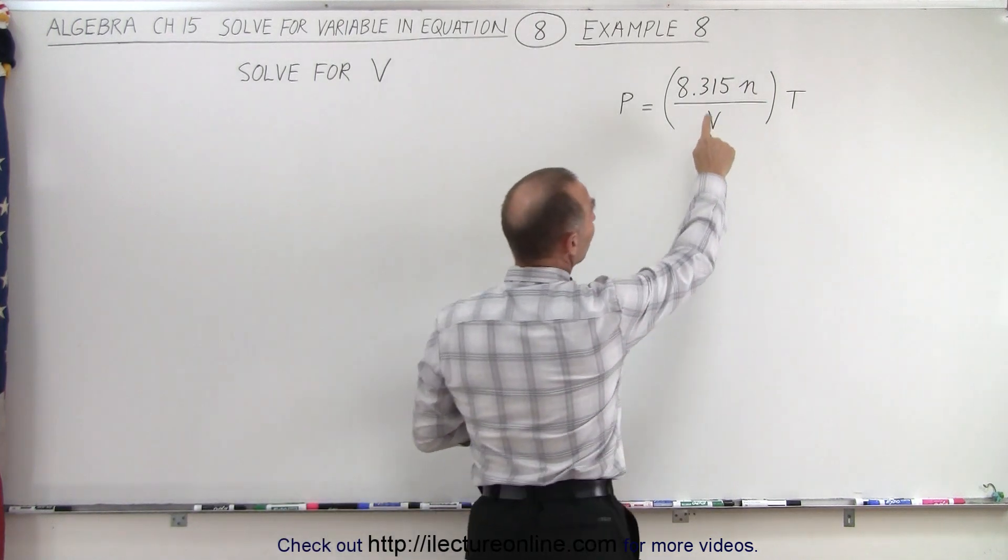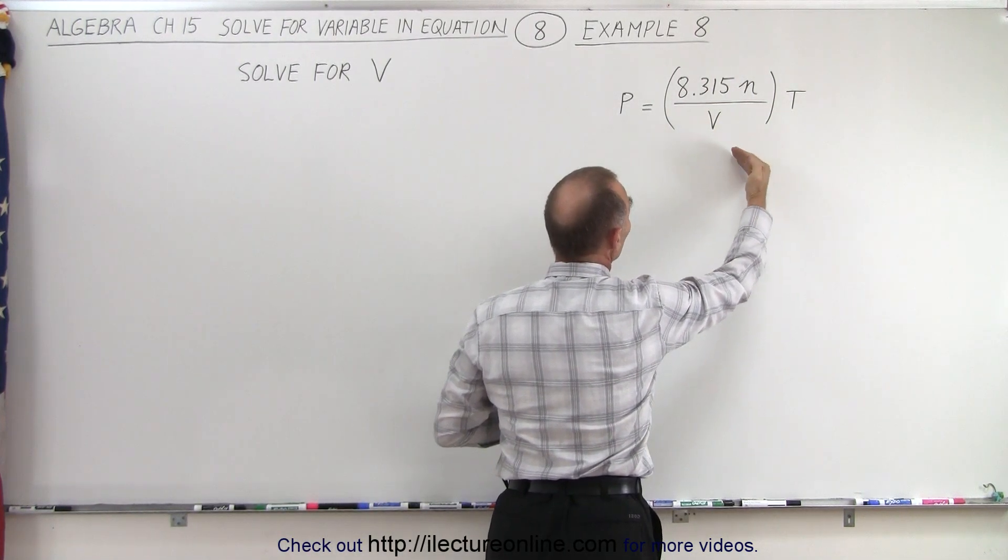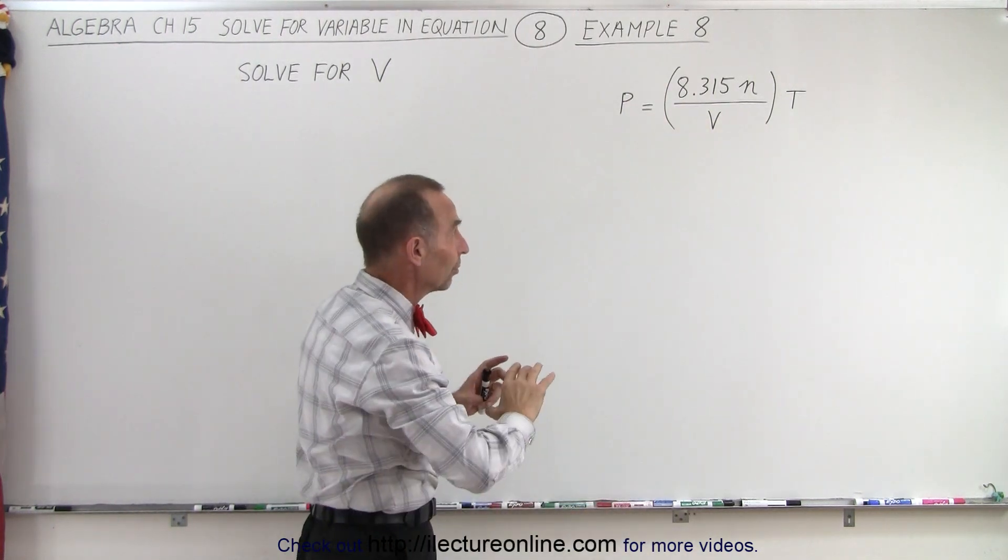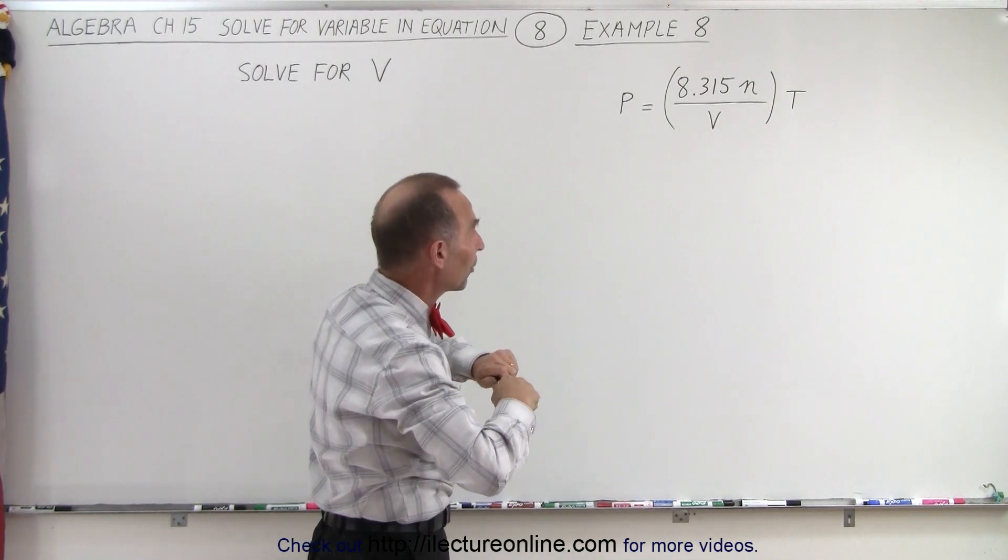We take a look at this. We notice that everything is multiplied in the numerator. We have a v in the denominator. We should be able to move the v up here and the p down there. We should be able to see that. So let me work it out that way, and then we'll show you why it is possible to do that.